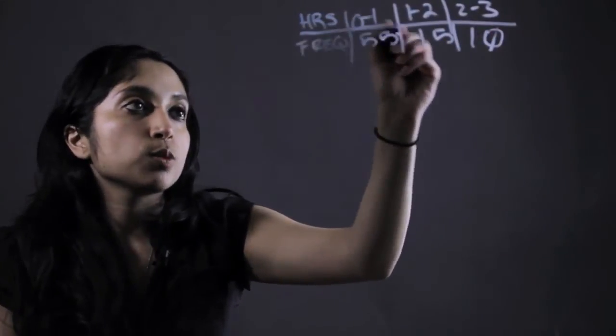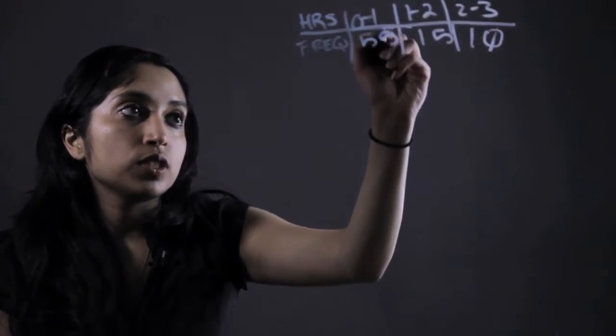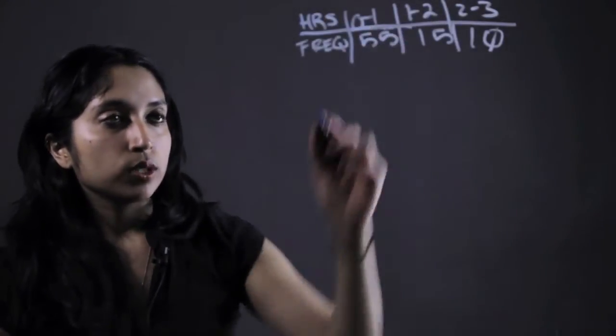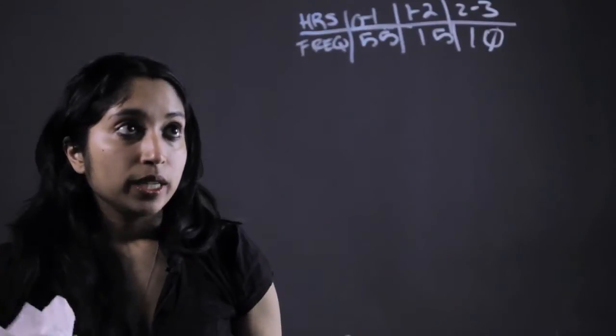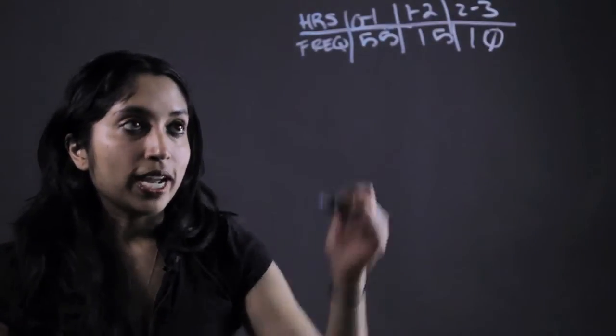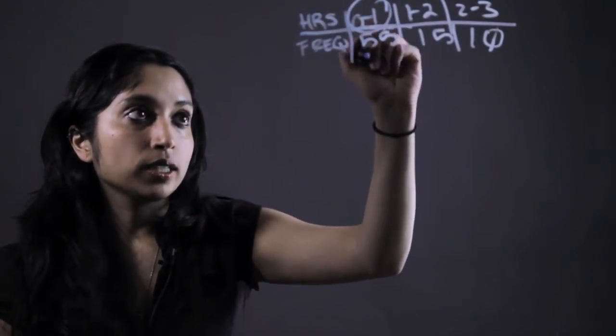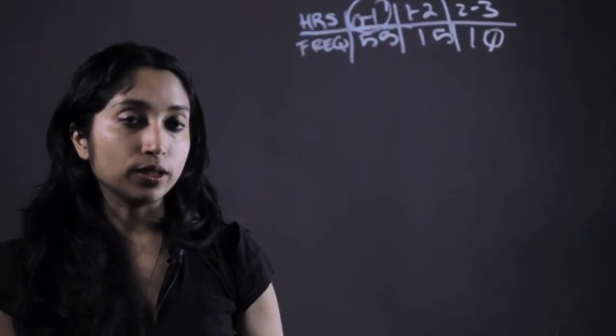So this would be like someone who watches between 0 and 1 hours of TV—55 people said they did that. That's kind of what these numbers mean. Now because we're trying to calculate mean, median, all of that, and we don't have actual numbers, what we do is we take an approximation and find the midpoint of this value.